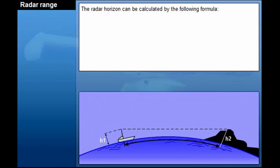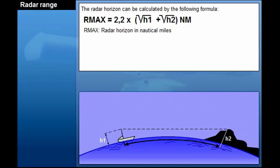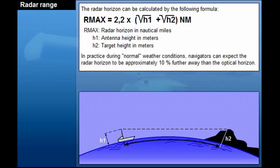The radar range will vary with changing weather conditions. During standard atmospheric conditions, that is, 1013 millibar air pressure, zero altitude and an air temperature of 18 degrees centigrade, the following formula can be used. Where Rmax is radar horizon in nautical miles, H1 is antenna height in meters, H2 is target height in meters. In practice during normal weather conditions, navigators can expect the radar horizon to be approximately 10% further away than the optical horizon.